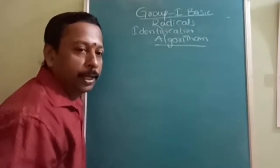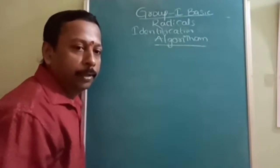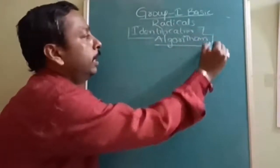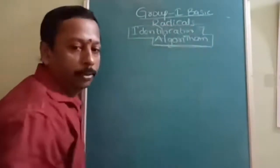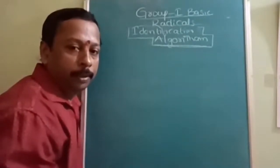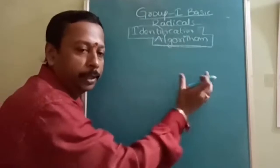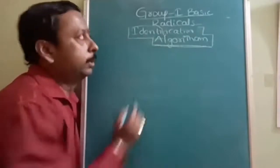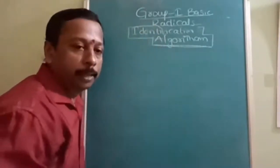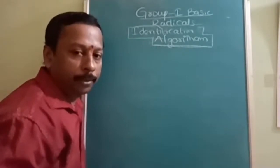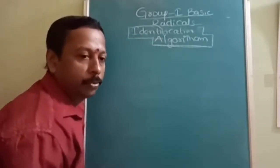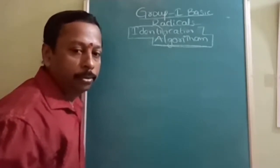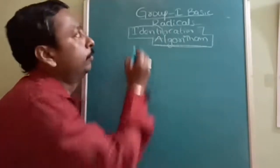Today we will cover Group 1 basic radicals. First, we will understand the identification algorithm — a step-by-step decision-making process with yes/no branches. This is a decision-making chapter, so you cannot understand it just by going through the reactions. You have to follow the sequence and understand the algorithm for scoring.